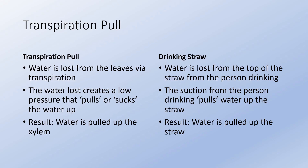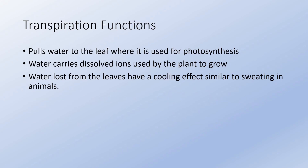Transpiration pull is the main driving force in getting water to the top of tall plants and trees — without it these plants would die if they became too tall. Transpiration also functions to give the leaf water for photosynthesis, and since it carries dissolved ions from the soil, the plant can use these ions for growth and development.